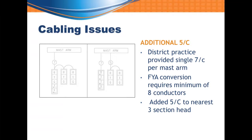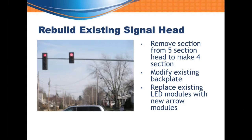One issue we ran into during design was our cables. Standard procedure was to run a single seven-conductor cable out the mast arm to the shared signal face — it had enough conductors for both through and left turn movements, with jumpers back to the other heads. But converting to flashing yellow arrow, that seven-conductor no longer satisfied the requirements, so we had to add an additional cable. We repurposed the seven-conductor for the flashing yellow arrow head and added a five-conductor cable for the through movements.